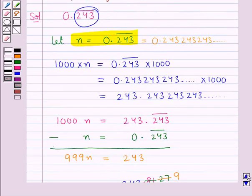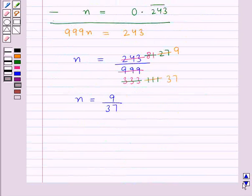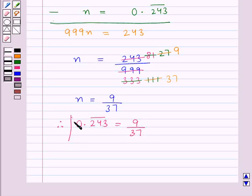As you know, we have taken n to be 0.243 bar. Thus, we get 0.243 bar equals 9 upon 37. We have expressed the given repeating decimal as a fraction in simplest form.